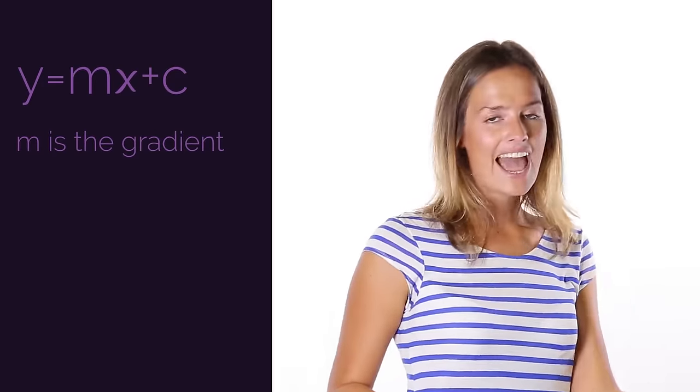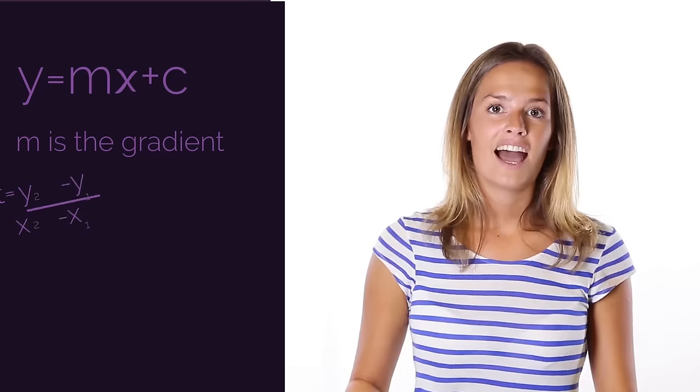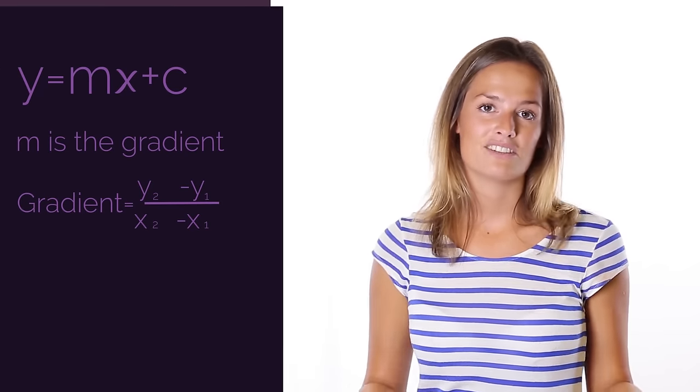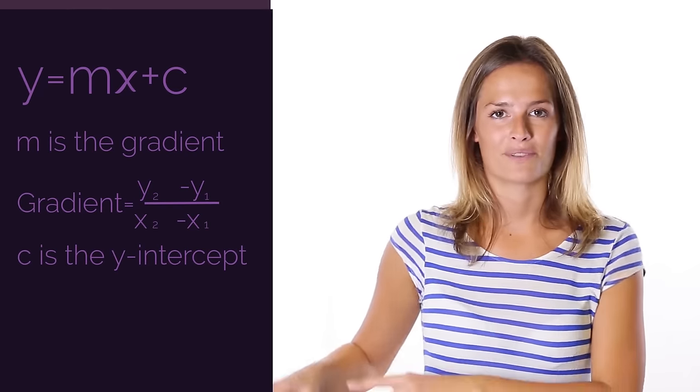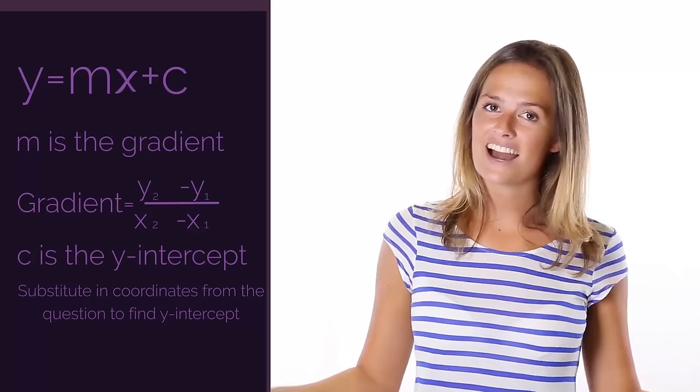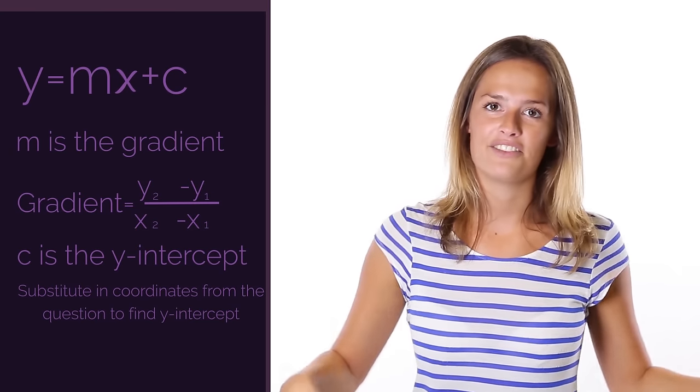We use the y equals mx plus c equation, and for the gradient m we've got that really easy little equation. And then to find the y-intercept you just use a set of coordinates from the question. And that's how you find the equation of a straight line through two points.